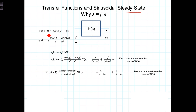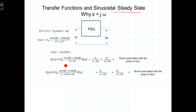So for V_in equaling this, the corresponding Laplace representation of it would be this. And we know that we can determine the Laplace form of the output by taking the Laplace representation of the input and multiplying it by the transfer function. So in this instance we have V_out(S) will be the Laplace transform of the input times the transfer function.